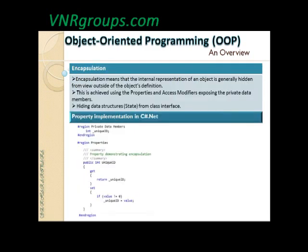The next core concept is encapsulation. Encapsulation means that the internal representation of an object is generally hidden from view outside of the object's definition. It's pretty much hiding the state of a class interface, and it also means that the internal implementation details are hidden from the outside.